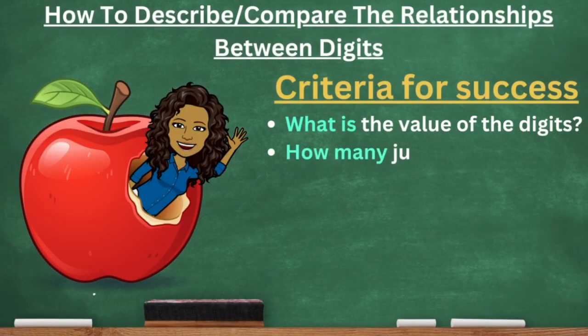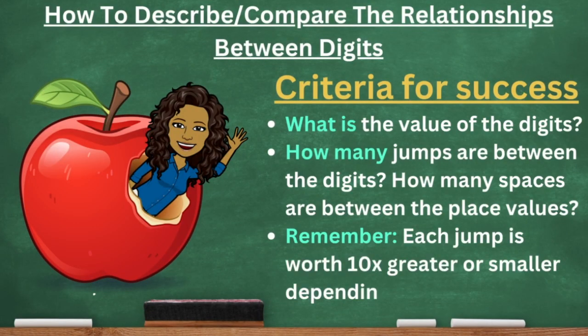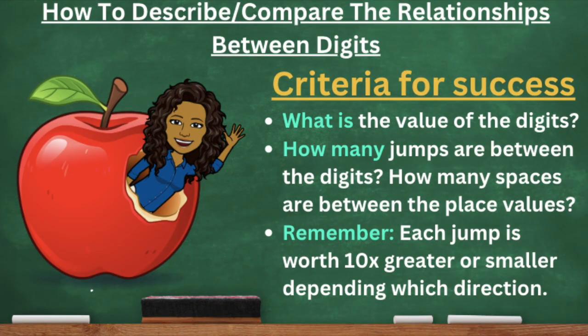In today's class, you guys are going to learn how to describe and compare the relationship between digits. Let's take a look at our criteria for success. First, we have to think about what is the value of the digits. Then we have to say how many jumps are between the digits, or how many spaces are between the place values. And remember, each jump is worth 10 times greater or smaller depending on which direction.